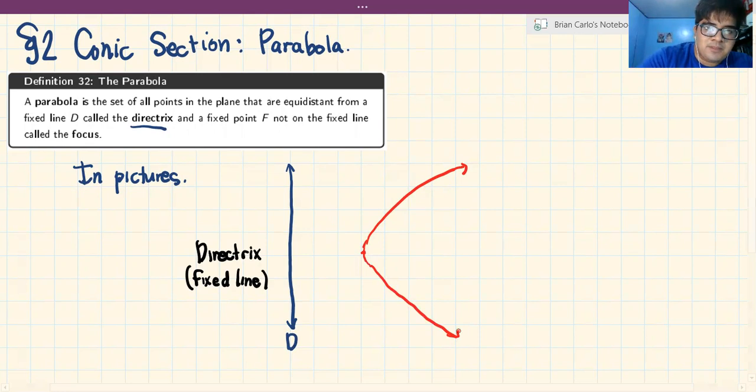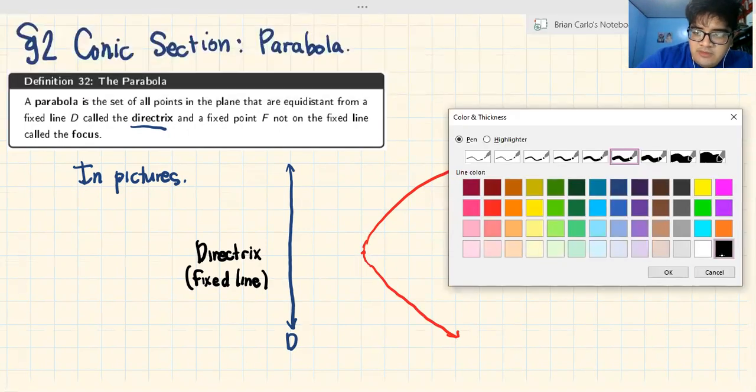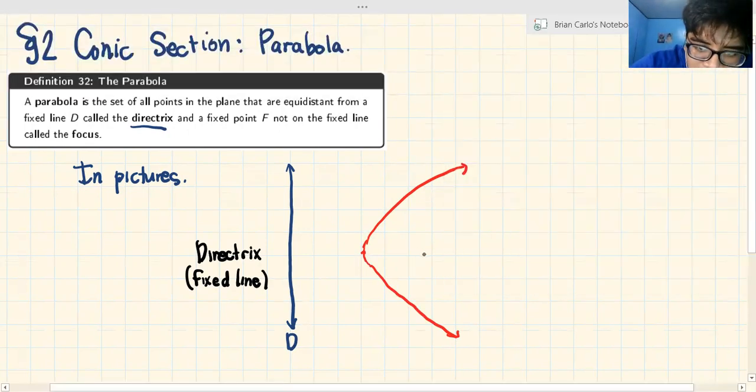This is the parabola. We have a fixed point right over here. This is the fixed point F. F is called the focus. This is the focus or the fixed point.